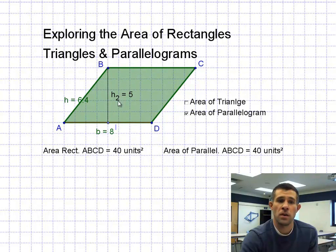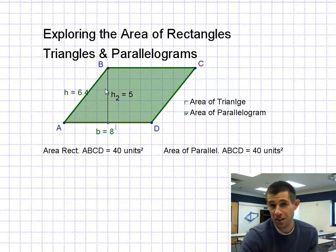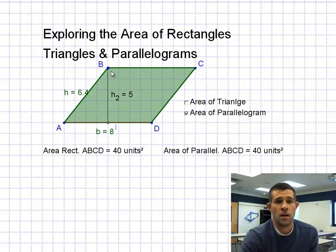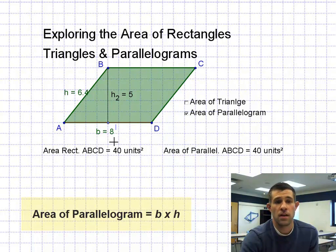The height of this parallelogram is equal to five. A common mistake is assuming that the slanted side of the parallelogram is going to be the height — that's not true. The height of a parallelogram is the perpendicular distance between the two parallel sides. So the height here is five, the base is still eight, and therefore the area equals the area of that rectangle with the same base and height.